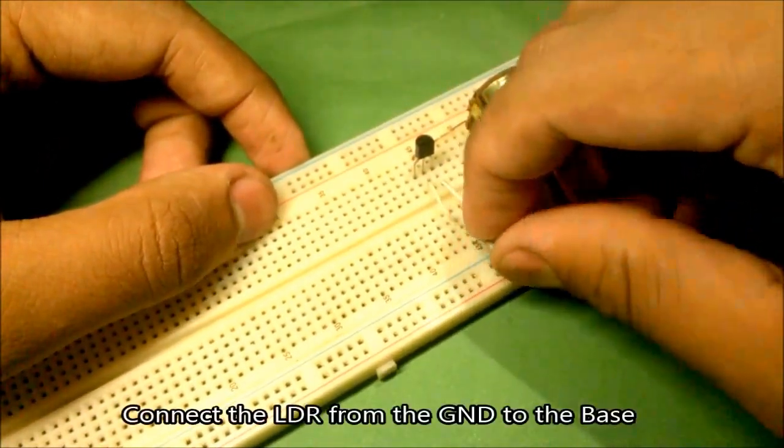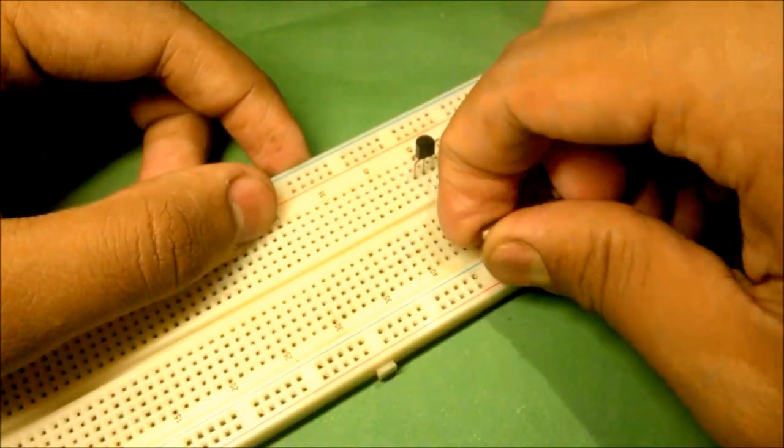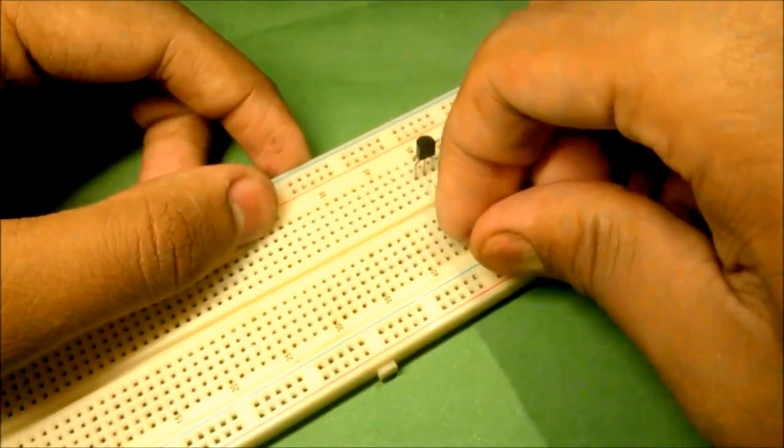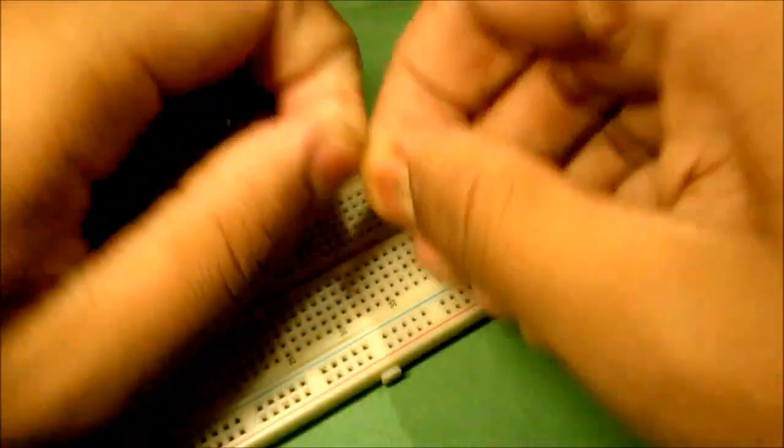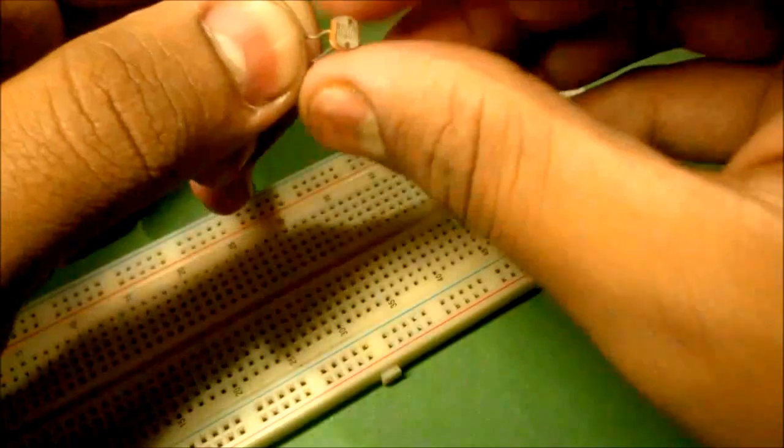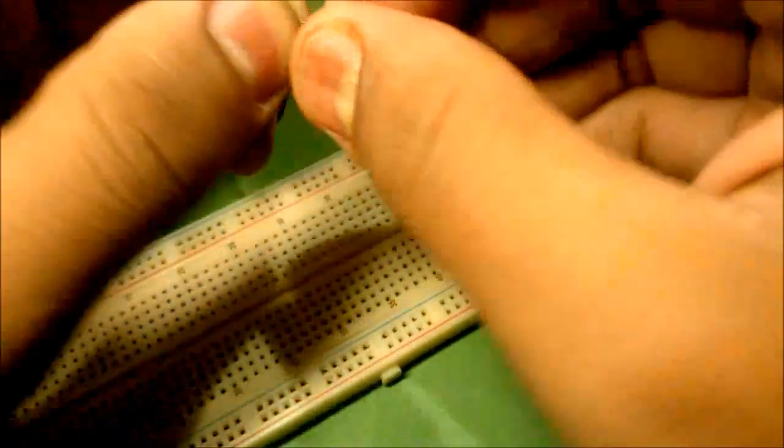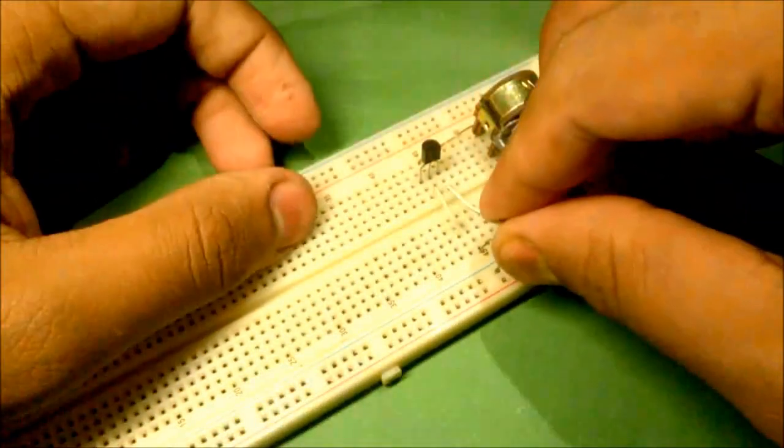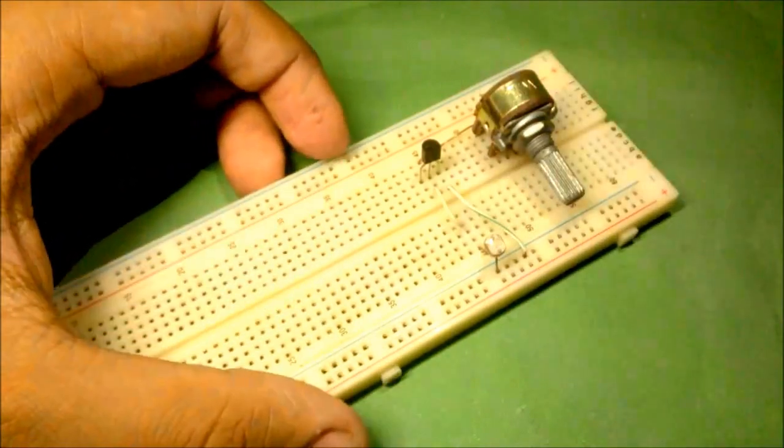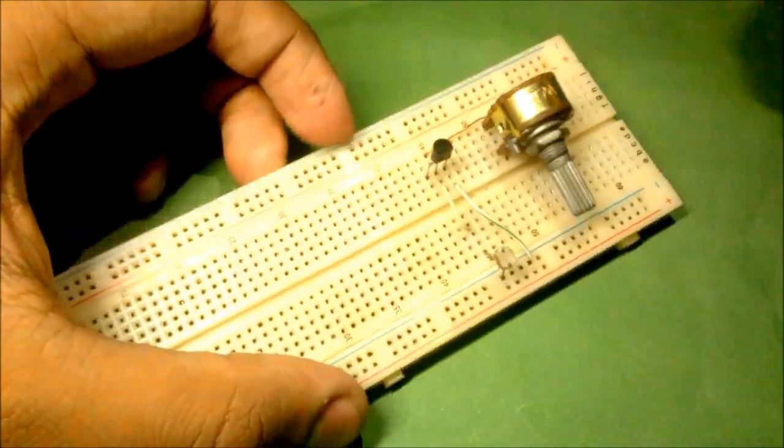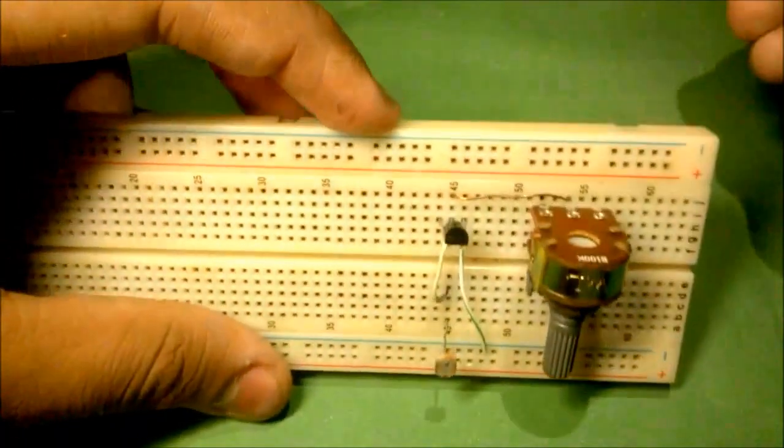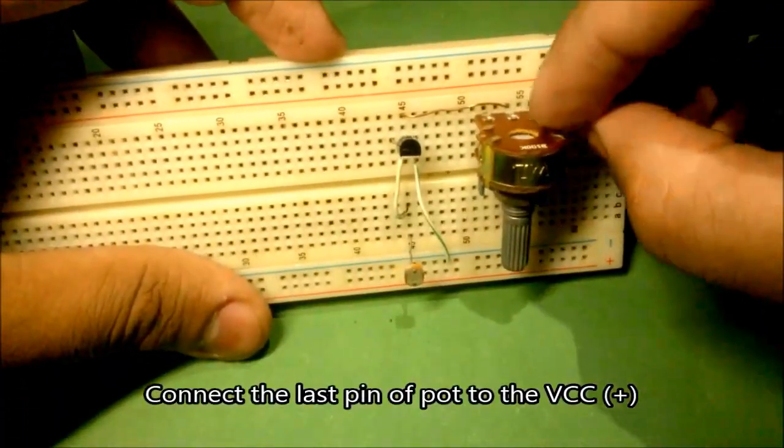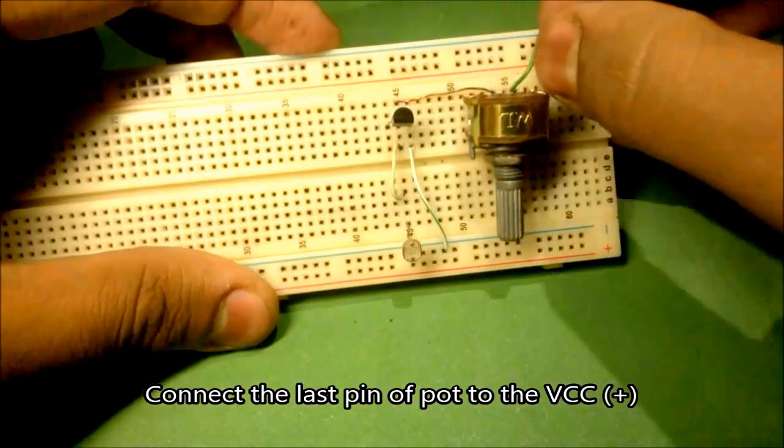Now connect the LDR from the ground to the base. Now connect the last leg of the pot to the VCC or positive.